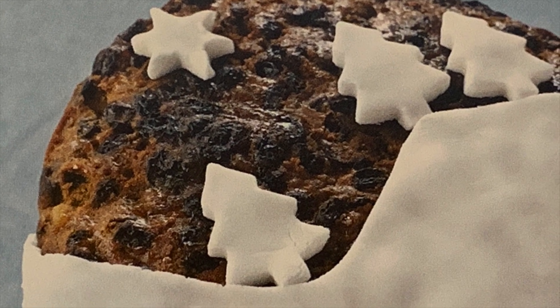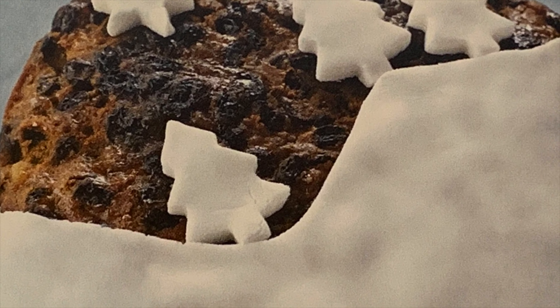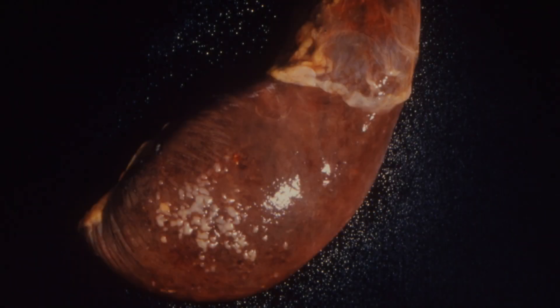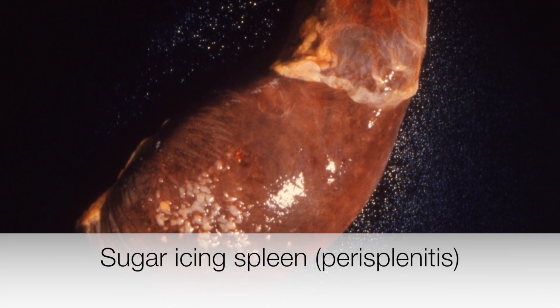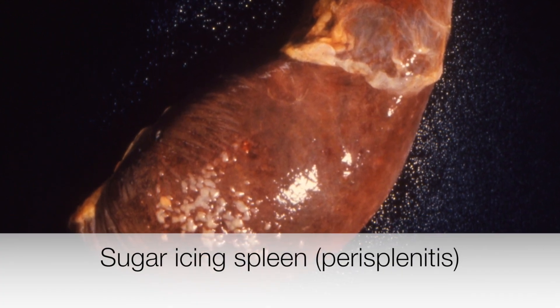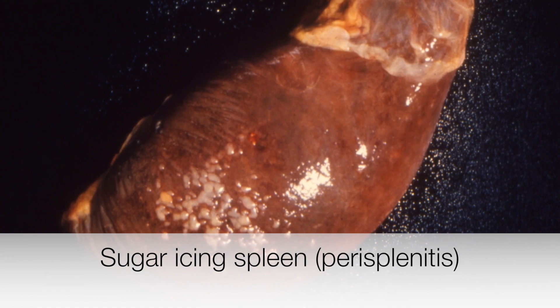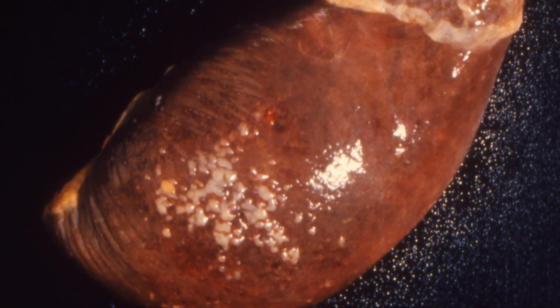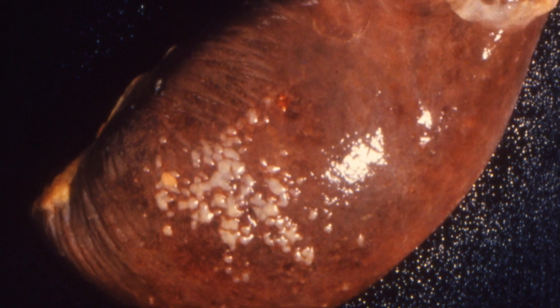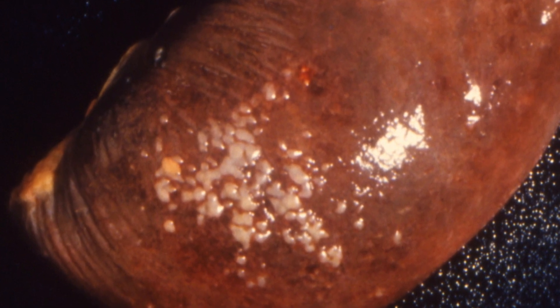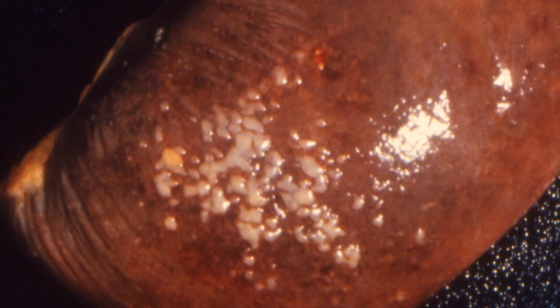The icing on the cake for the last question of this quiz is the sugar icing appearance on the spleen. This is called perisplenitis, which is caused by fibrosis on the surface of the spleen. The only significance is that it clearly demonstrates the pathological obsession pathologists have with naming conditions after food.